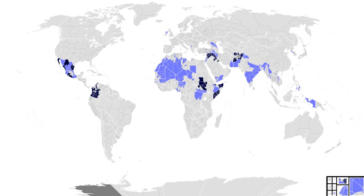Aerial warfare is the use of military aircraft and other flying machines in warfare. Aerial warfare includes bombers attacking enemy concentrations or strategic targets, fighter aircraft battling for control of airspace, attack aircraft engaging in close air support against ground targets, naval aviation flying against sea and nearby land targets, gliders, helicopters and other aircraft to carry airborne forces such as paratroopers, aerial refueling tankers to extend operation time or range, and military transport aircraft to move cargo and personnel.